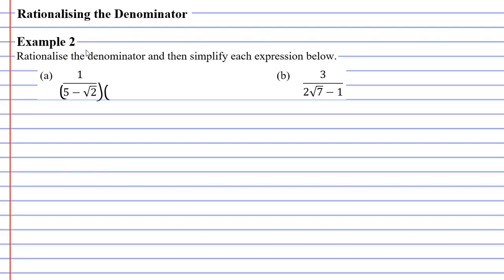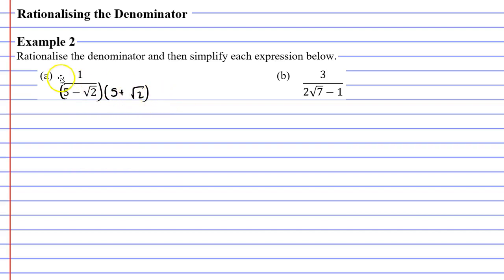We're going to have an expression which also has a 5 as well as a root 2, but instead of a minus, we're going to have a plus. Some of you might have noticed that this is the difference of two squares. The difference of two squares involves two sets of brackets which have the same two terms, except one has a minus and one has a plus. When you expand this, you get a nice whole number, which means we rationalize the denominator.